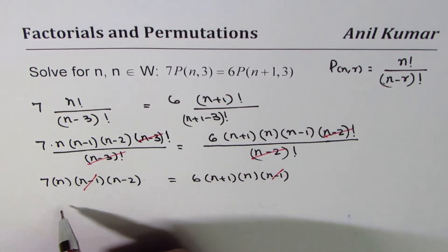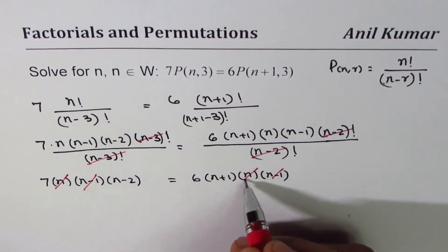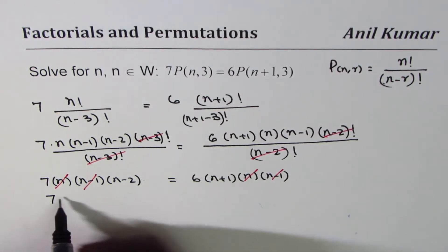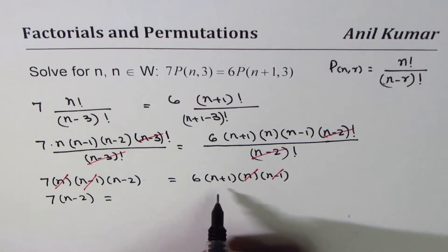So we are left with 7 times (n-2) equals 6 times (n+1).